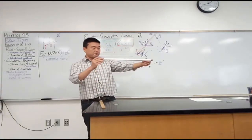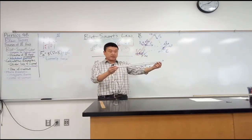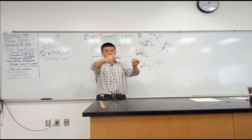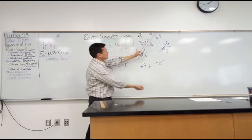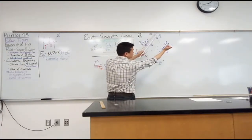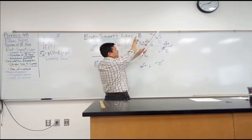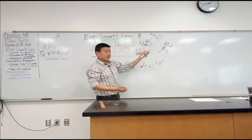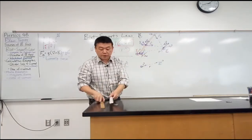So let me try to demonstrate it in three dimensions. This is what the magnetic field should look like. If this is the wire, then the magnetic field should look like it's going around. The magnetic field is going into the board here, coming out of the board here. When you connect that direction, it would complete a circle. So that's the sense of intuition you have.